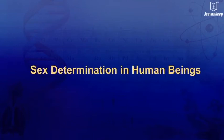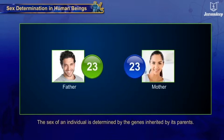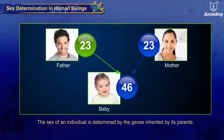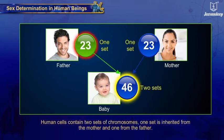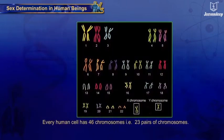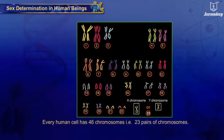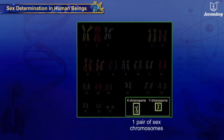How is sex determined in human beings? In humans, the sex of an individual is determined by the genes inherited from its parents. Human cells contain two sets of chromosomes. One set is inherited from the mother and one from the father. Every human cell has 46 chromosomes, that is 23 pairs. There are 22 pairs of autosomes and one pair of sex chromosomes.